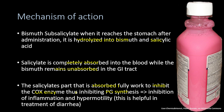The cyclooxygenase enzyme produces prostaglandin. Once inhibited, less prostaglandin is synthesized. Prostaglandin contributes to inflammation and hypermotility of the gastrointestinal tract, so reduced prostaglandin leads to less inflammation and less hypermotility — both helpful in the treatment of diarrhea.